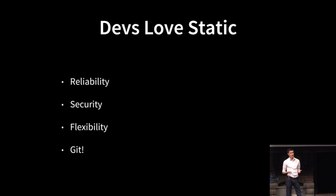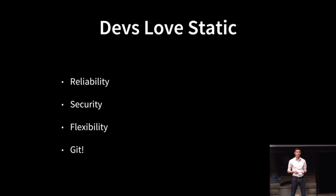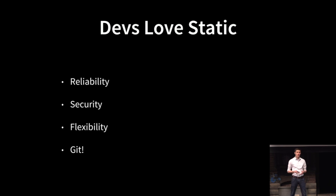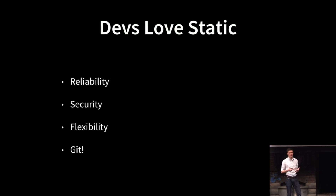Me and our other marketing engineer loved this setup. Since all we were dealing with was static HTML, CSS, and JavaScript files, there was almost nothing that could break. Our InfoSec team was very happy because there were fewer endpoints to attack. We also enjoyed the flexibility of not being tied to a monolithic framework like WordPress or Magnolia. And as a content producer, my rule of thumb is that if content doesn't exist in a Git repository, it doesn't actually exist at all — so I loved that all our content was now version controlled with Git.